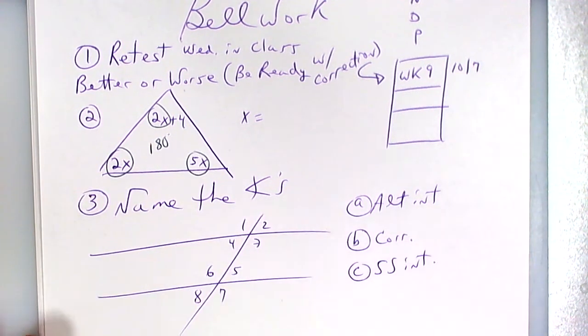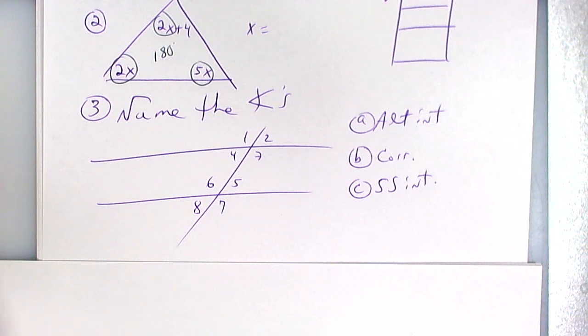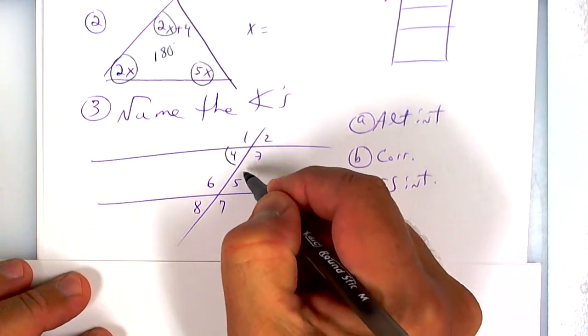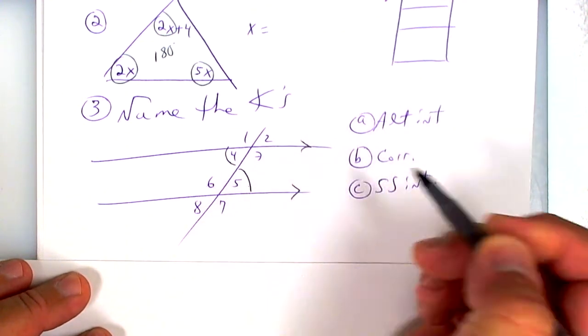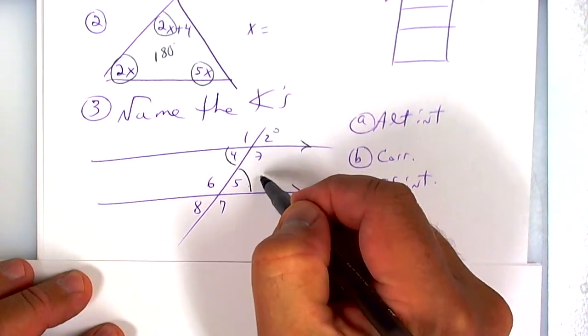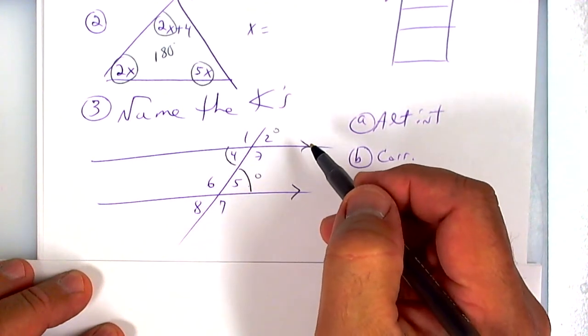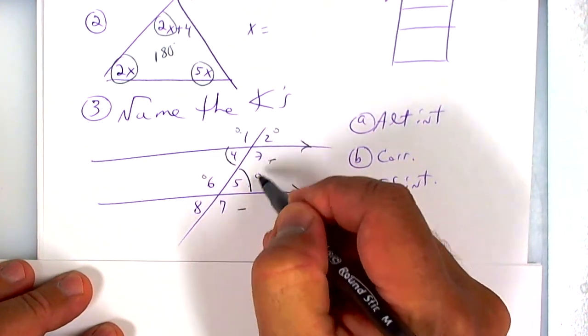You also had to do some angles. I tried to teach these to you. Alternate interior would be this one, and if these are equal, this line would be parallel to that. Corresponding: top-top, so that would be 2 and 5, 1 and 6.